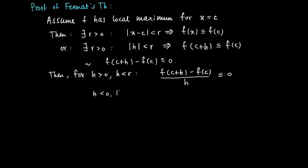If h is taken smaller than 0, and the absolute value is smaller than r, then f(c+h) minus f(c) divided by h, now we divide by a negative number, so the inequality sign changes, so now it's larger or equal than 0. And this holds for any h smaller than 0 and small enough.